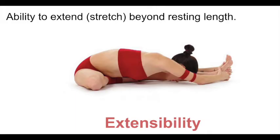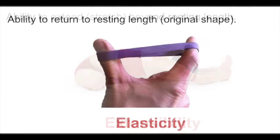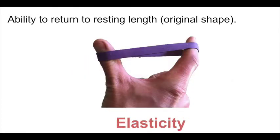Extensibility is the ability of muscle to be stretched or extended beyond its resting length. Elasticity is the ability of muscle to return to its resting length, or original shape, after shortening or lengthening.